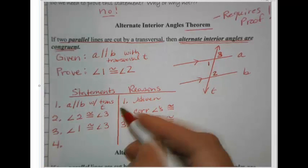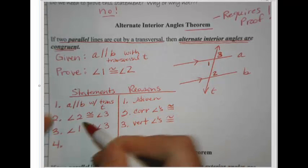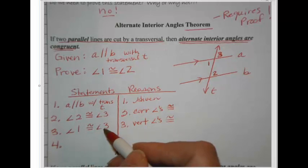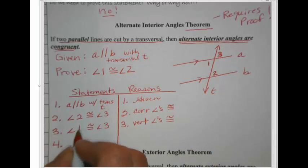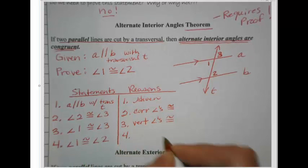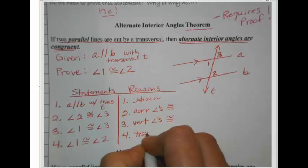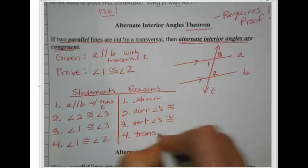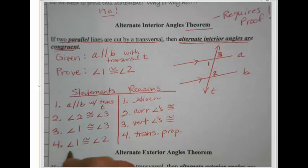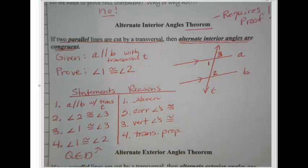I'm ready to make my last statement. Putting together lines 2 and 3: angle 2 matches angle 3, and angle 1 also matches angle 3. Since they both match angle 3, they must match each other — so angle 1 is congruent to angle 2. The reason is the transitive property. Since they both go with angle 3, they must be congruent to each other. Euclid would say QED — we've proven that alternate interior angles are congruent.